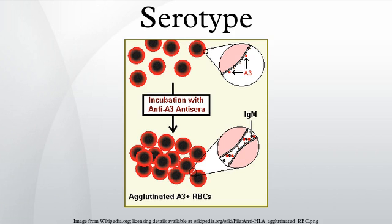Serotype or serovar are distinct variations within a species of bacteria or viruses, or among immune cells of different individuals. These microorganisms, viruses, or cells are classified together based on their cell surface antigens, allowing the epidemiologic classification of organisms to the subspecies level. A group of serovars with common antigens is called a serogroup, or sometimes serocomplex.